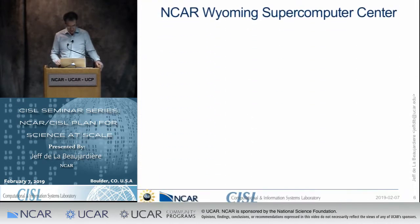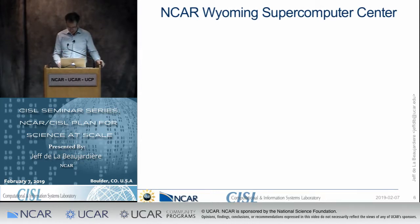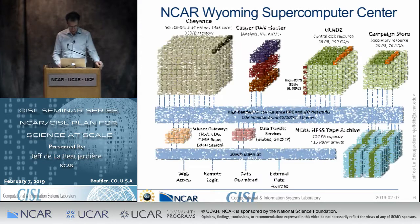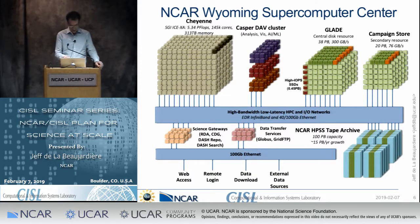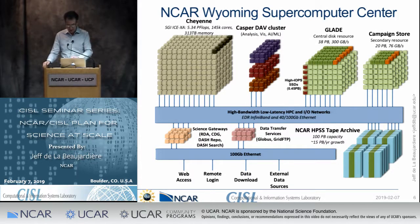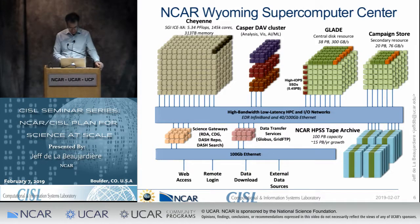With some definitions out of the way, we already have a really good capacity to handle data at the NCAR Wyoming Supercomputer Center. You might have seen this canonical diagram before. We've got Cheyenne, we've got Casper, we've got Glade Campaign Store, HPSS, these science gateways, Globus, Grid FTP. People can log in remotely. They can download data. That's all really great.